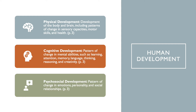Physical development is the development of the body and brain, including patterns of change in sensory capacities, motor skills, and health. Cognitive development is the pattern of change in mental abilities such as learning, attention, memory, language, thinking, reasoning, and creativity. And psychosocial development refers to the patterns of changes in emotions, personality, and social relationships. All of these are important and will be covered throughout each stage of development.